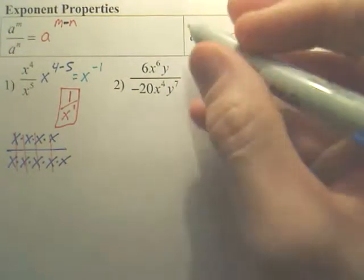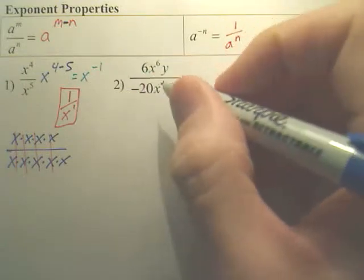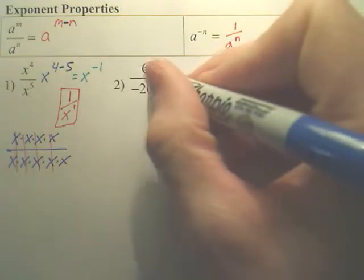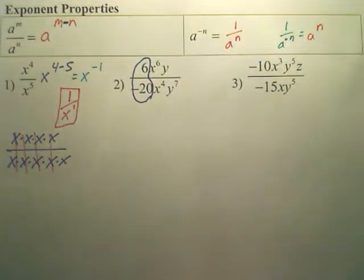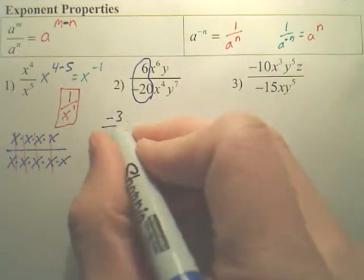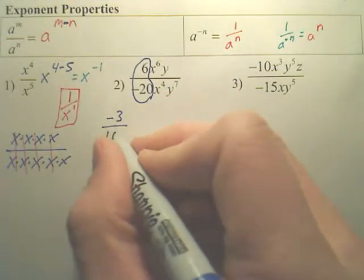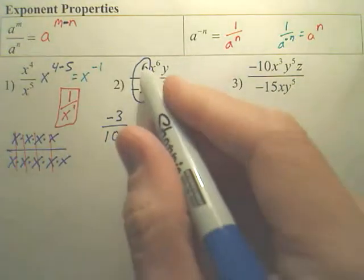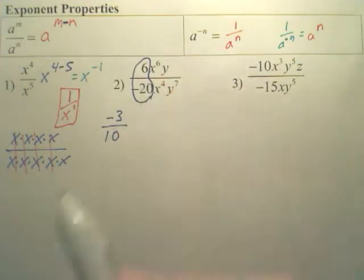Number two, this is just the same concept, but it has multiple layers or steps. For instance, first, let's focus in on this. Can you reduce 6 over negative 20? Yeah, doesn't 2 go into both those? So wouldn't that be negative 3 over 10? Now, does it matter if the negative is on top or bottom? No.